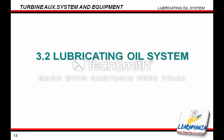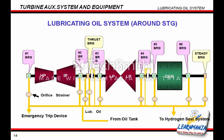Next we will explain the lubricating oil system. This is an outline of the lubricating oil system for the turbine and generator equipment. The lubricating oil system supplies oil to all bearings of the turbine and generator, the coupling, and the hydrogen seal equipment. The orifice strainer shown on the left-hand side of the figure regulates the amount of oil supplied to each bearing.